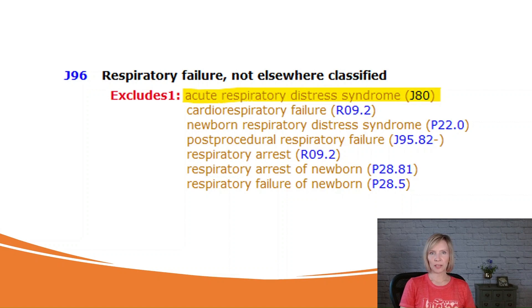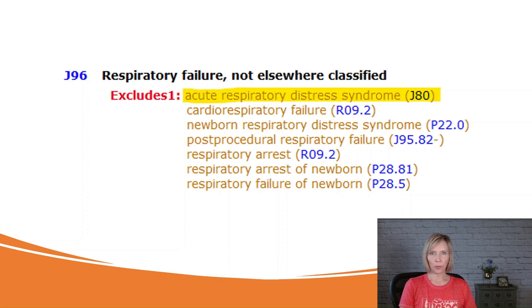One of the most confusing things for coders when it comes to applying the EXCLUDES-1 note is deciding which of the two conditions should be assigned the code. The general rule is that only the code for the condition mentioned in the EXCLUDES-1 note should be assigned, as long as there's no conflicting coding guideline preventing it.